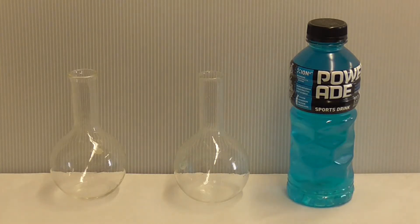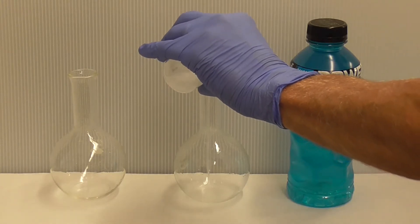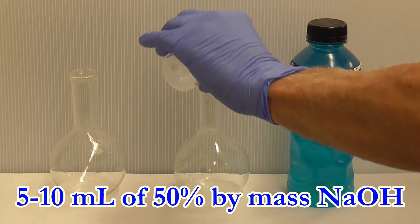The trick to the experiment is prior to doing it, you're going to want to pour into one of the flasks 5 to 10 milliliters of 50% by mass sodium hydroxide solution.